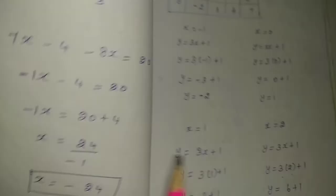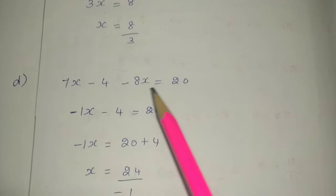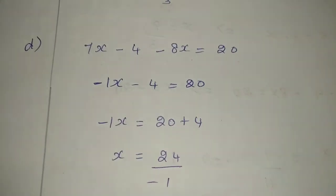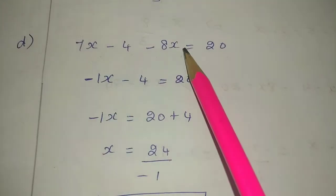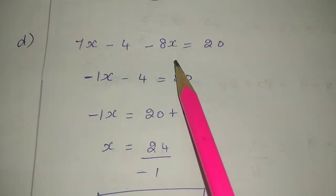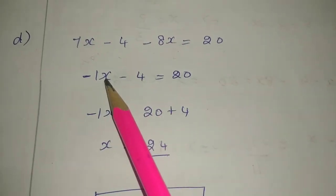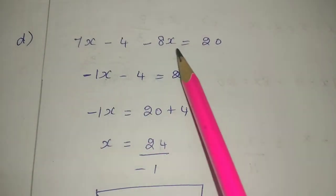Next, the d value: 7x minus 4 minus 8x equals 20. In this part, there are 2 variables and 1 constant. First, compare the 2 variables to make like terms. There is minus and plus, so different symbols mean subtract.